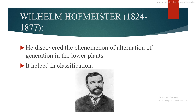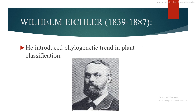Next is Wilhelm Hofmeister, 1824–1877. He discovered the phenomenon of alternation of generations in the lower plants, which helped in classification. Next is Wilhelm Eichler, 1839–1887. He introduced the phylogenetic trend in plant classification.